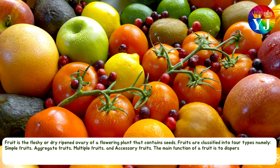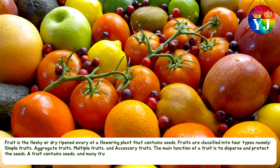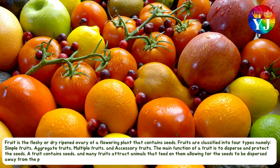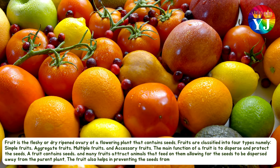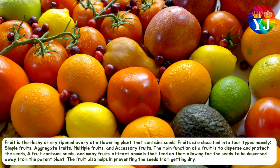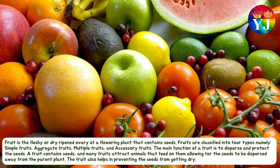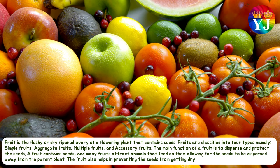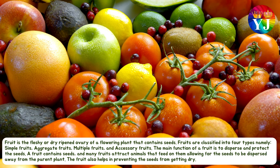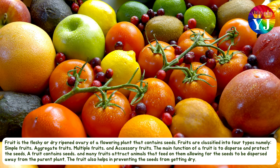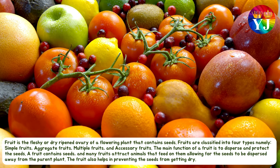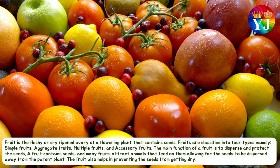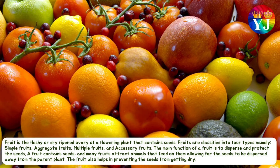Fruits are classified into four types: simple fruits, aggregate fruits, multiple fruits, and accessory fruits. The main function of a fruit is to disperse and protect the seeds. A fruit contains seeds, and many fruits attract animals that feed on them, allowing for the seeds to be dispersed away from the parent plant. The fruit also helps in preventing the seeds from getting dry.